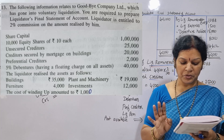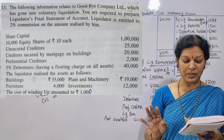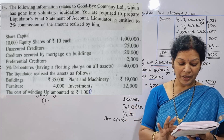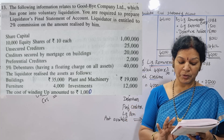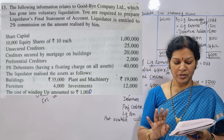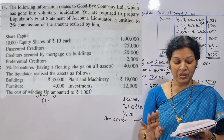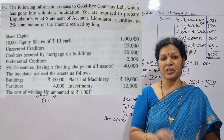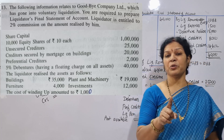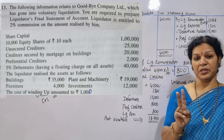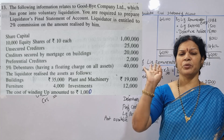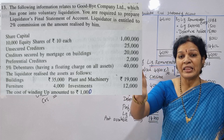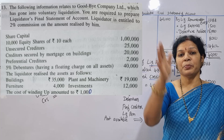The liquidator is entitled to 2% commission on the amount realized by him. That amount is 2% of the amount realized.